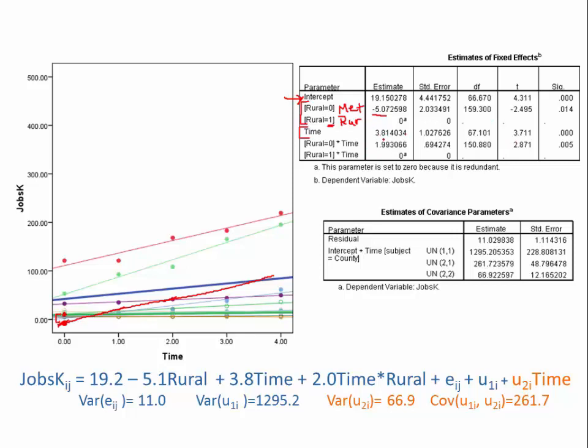Time is the slope of the green line, the effect of time for the rural counties. And then 1.99 is the difference in the slopes between this blue line, which I've redrawn in red, and the green line. So if we wanted to know what's the actual slope for the metropolitan counties, we'd have to add these two together. So it would come out to approximately 5.8, that would be the slope of the metropolitan counties. So whereas the rural counties are growing at a rate of 3,800 jobs per decade, the metropolitan counties are increasing about 5,800 jobs per decade over this time frame on average.